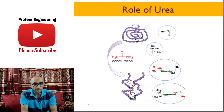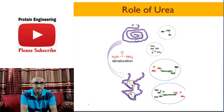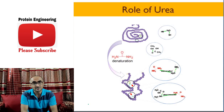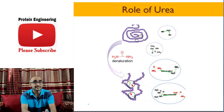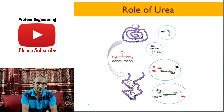Urea is a chaotropic agent. When a protein is treated with urea, it tends to replace intramolecular hydrogen bonding in the protein which stabilizes its structure. It also replaces water-protein interactions. As a result, the protein starts opening up — the core of the protein starts exposing to the outside environment — and water molecules start entering the core, which is non-polar in nature. That's how urea causes denaturation or unfolding of a protein.